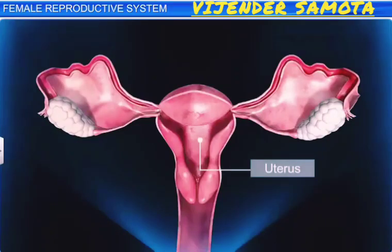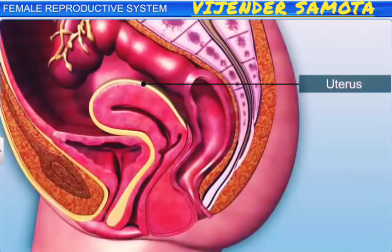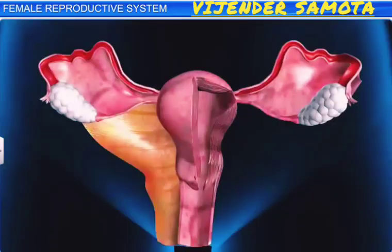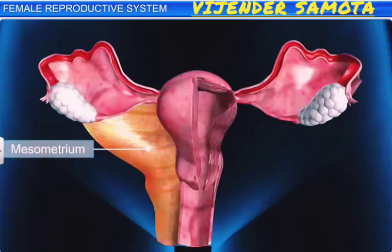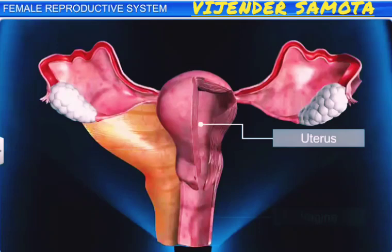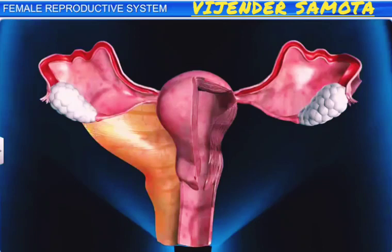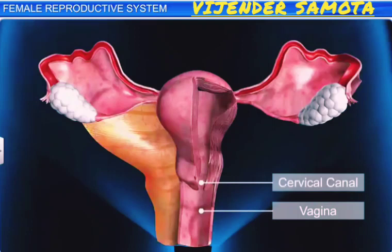The uterus is a hollow, pear-shaped, muscular organ and is highly distensible. It is situated in the pelvic cavity between the urinary bladder and the rectum. It is also known as the womb. It is supported by ligaments attached to the pelvic wall, known as mesometrium. The uterus opens into the vagina through a narrow cervix. The cavity of the cervix is called the cervical canal, which along with the vagina forms the birth canal.